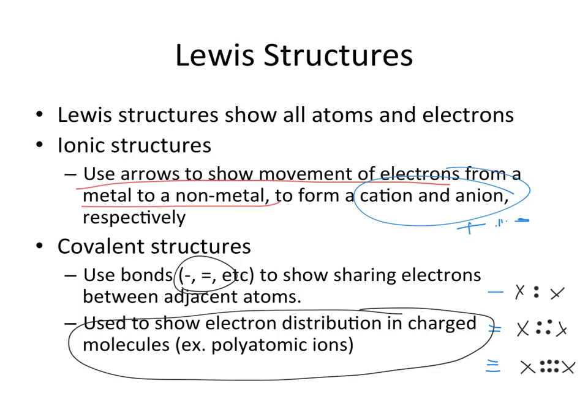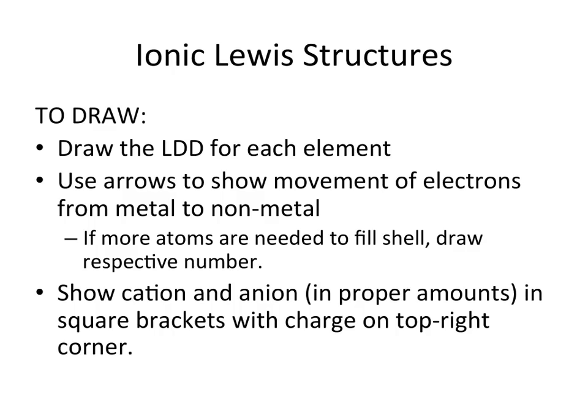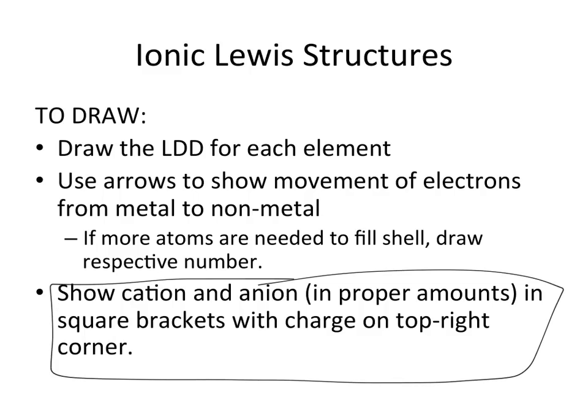If you have a polyatomic ion with a charge, the diagram also shows the distribution of electrons in that molecule. To draw Lewis structures, we first draw the Lewis dot structures and use arrows to show the movement of electrons. If a non-metal doesn't have its full valence shell filled, we need more metals to give away electrons, and vice versa. Cations and anions go in square brackets with the charge in the top right-hand corner.